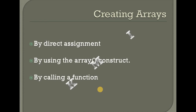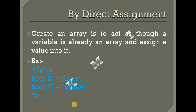There are three methods to create an array. The first method is by direct assignment. For example: $colors[0] = 'blue'; $colors[1] = 'green'; $colors[2] = 'red'. This directly assigns values one by one.